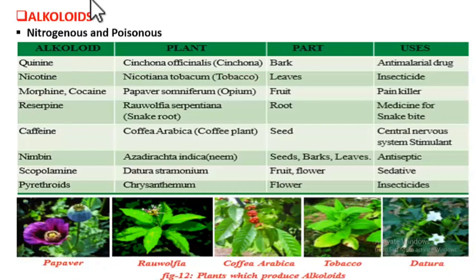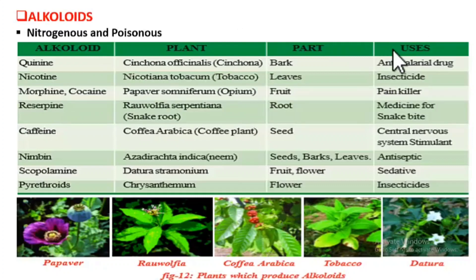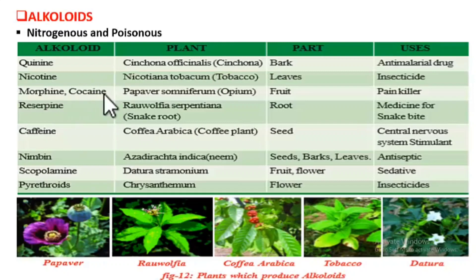Next is nicotine, obtained from the leaves of Nicotiana tobacum — the tobacco plant. Nicotine is used as an insecticide to kill insects that harm our crops. Then morphine and cocaine, both obtained from the fruits of Papaver somniferum. These two alkaloids are used as painkillers.